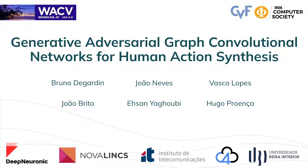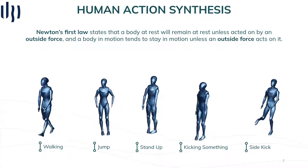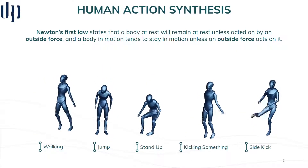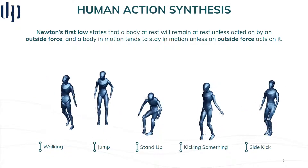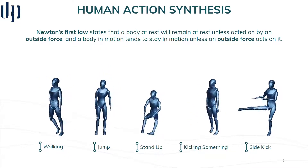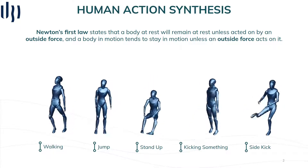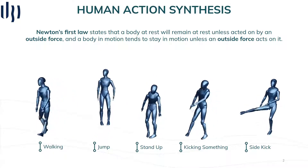Hey everyone, my name is Brun de Garda and I'm going to present our work on generative adversarial graph convolutional networks for human action synthesis. Newton's first law states that a body at rest will remain at rest and a body in motion tends to stay in motion unless acted on by an outside force. So today we present KineticGAN, the synthesis of that outside force — a novel architecture that generates the kinetics of the human body.